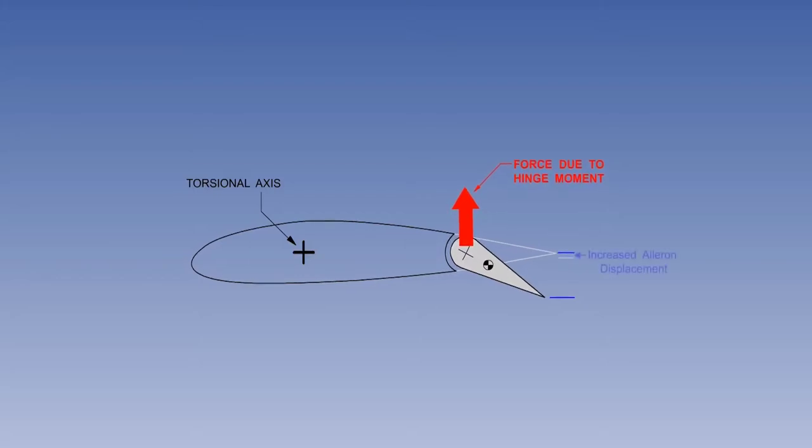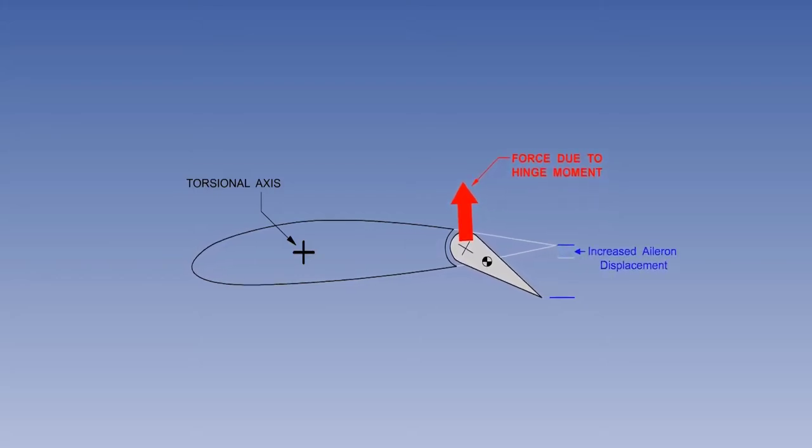This aerodynamic force will twist the wing about its torsional axis and start to wind up the wing like a spring.